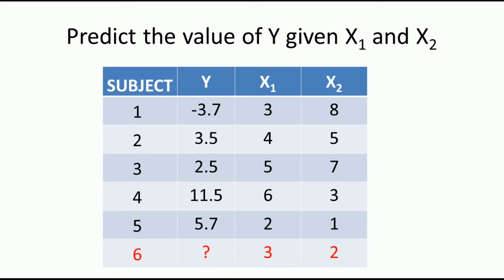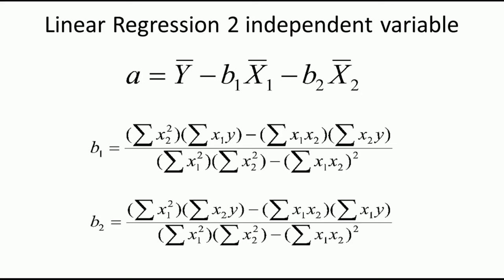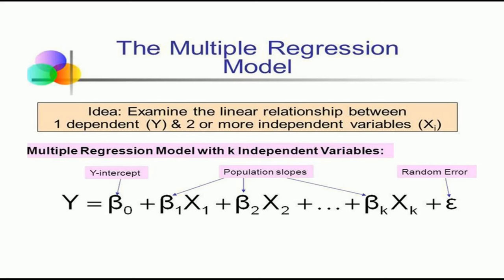To model the regression equation for multiple independent variables, we need to use some equations. The general regression model with k independent variables looks like: y = β0 + β1x1 + β2x2 + ... + βkxk + ε, where β0 is the y-intercept, β1, β2, ..., βk are the coefficients of x1, x2, ..., xk, and ε is the random error.